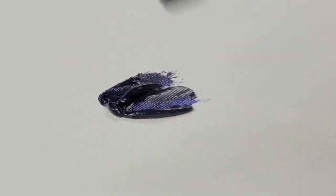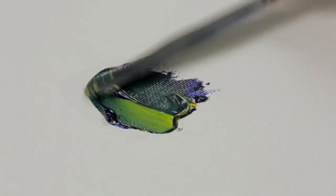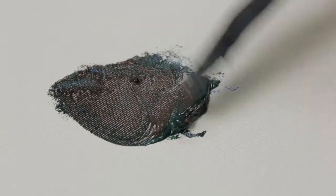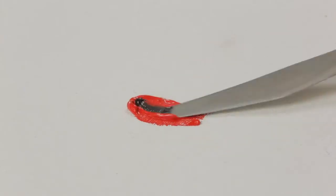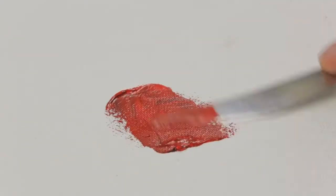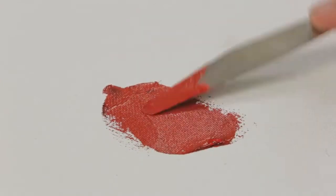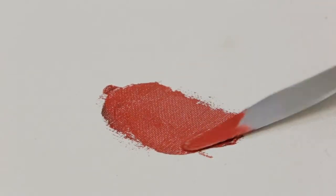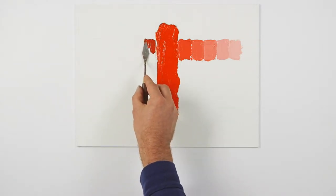I'll mix the three primaries together to make a fairly neutral black. Adding black to the red will deepen its value beneath its inherent value and will also reduce its saturation. These values could be referred to as shades.